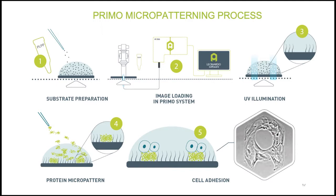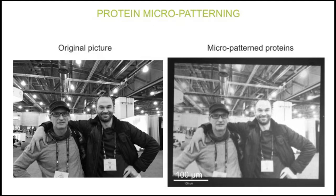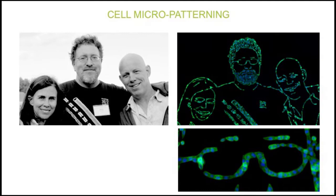In contrast to classical methods based on photomasks or printing — which produce black-and-white, binarized pictures — this technique allows formation of gradients, converting density of light into density of proteins. For example, you can take any picture, shine it onto the substrate, and convert the light into protein density. Here, fluorescent fibronectin has been grafted following the light pattern on the right; the scale bar is 100 microns. You can similarly use any image to graft proteins and then cells, as shown by a large image of many cells covering the outline of characters.